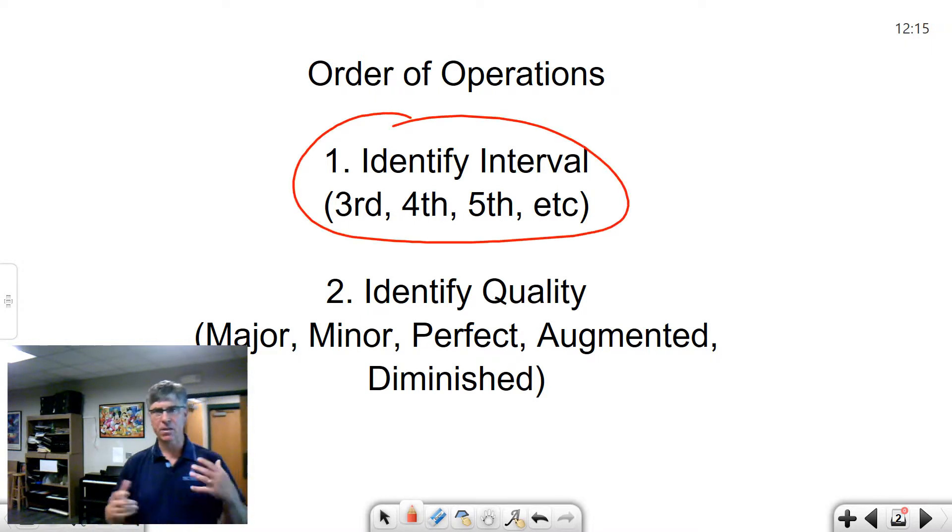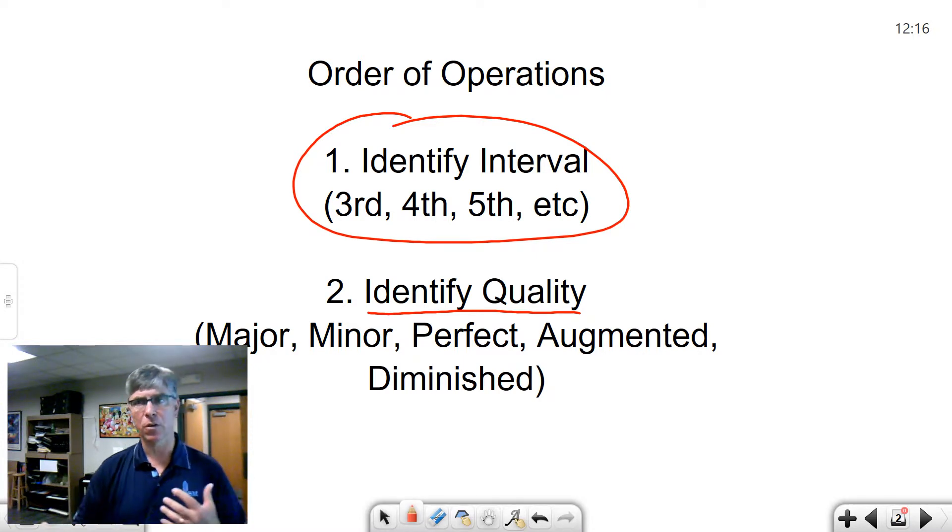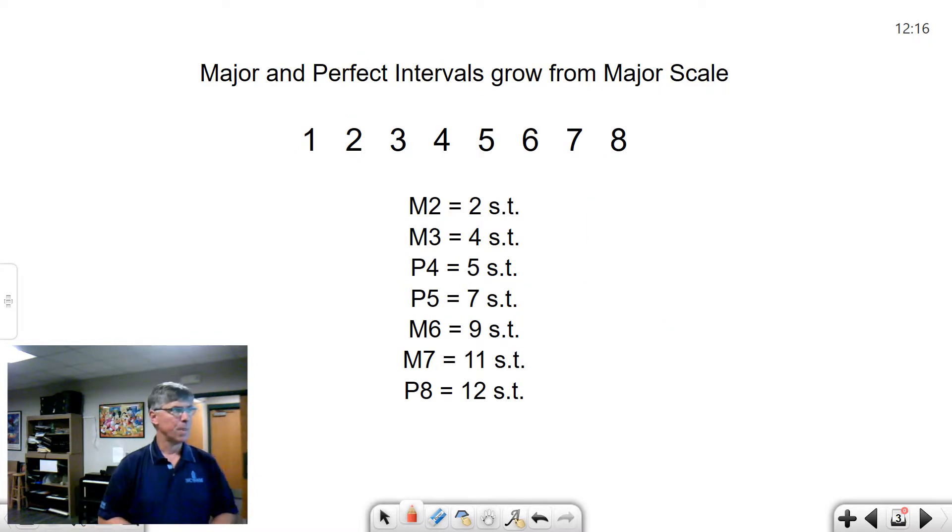After that is done, then you can go on to identifying the quality. If you flip this order over, just like in mathematics, you will get the wrong answer. If you start looking at quality first or counting half steps before you've determined what the interval is, you will run into trouble. The reason is certain intervals, two different intervals can have the same number of half steps.